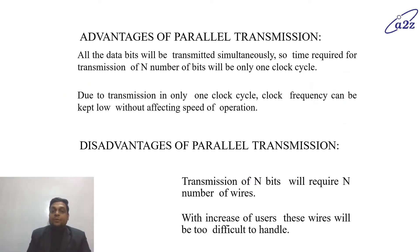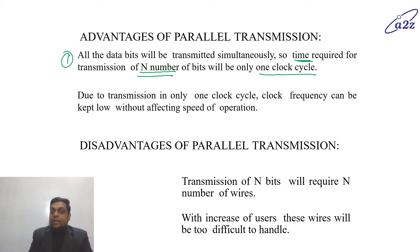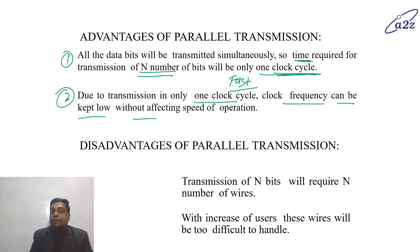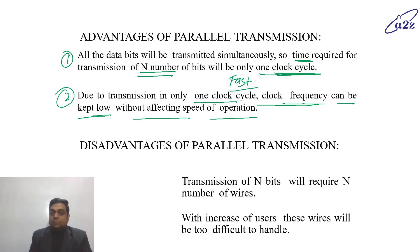Advantages of parallel transmission: first, all the data bits are transmitted simultaneously, so time required for transmission of n bits will be one clock cycle. All the bits are transferred in a single time period, so n number of bits will also be transferred in a single clock cycle — that means this process is very fast. Second, due to transmission in only one clock cycle, clock frequency can be kept low without affecting the speed of operation, since the operation is not dependent on clock frequency.